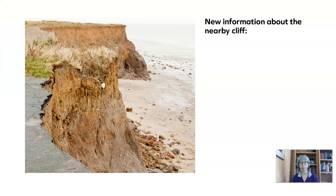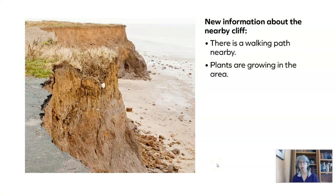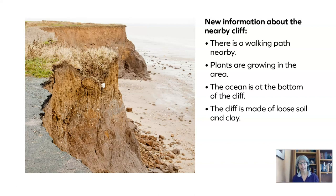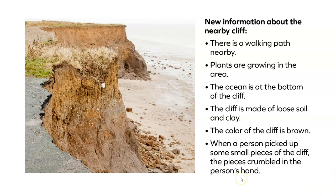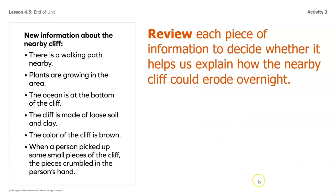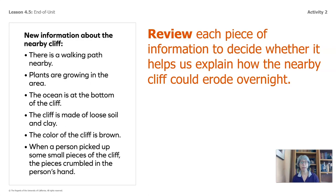Let's take a look at the new information. There is a walking path nearby. Plants are growing in the area. The ocean is at the bottom of the cliff. The cliff is made of loose soil and clay. The color of the cliff is brown. When a person picked up some small pieces of the cliff, the pieces crumbled in the person's hand. You'll find these in your packet as well, so if you'd like, you can pause the video and review them — you might want to circle some that you think might be helpful.